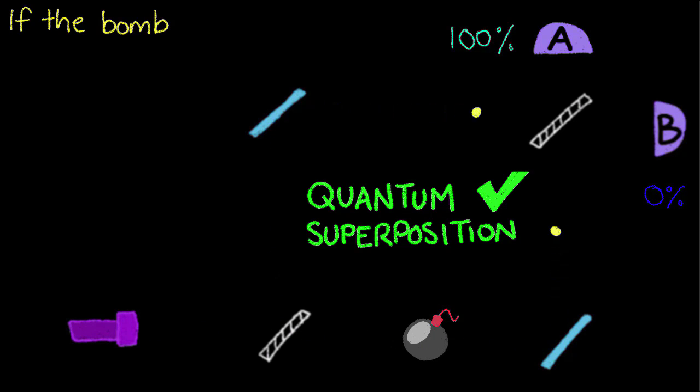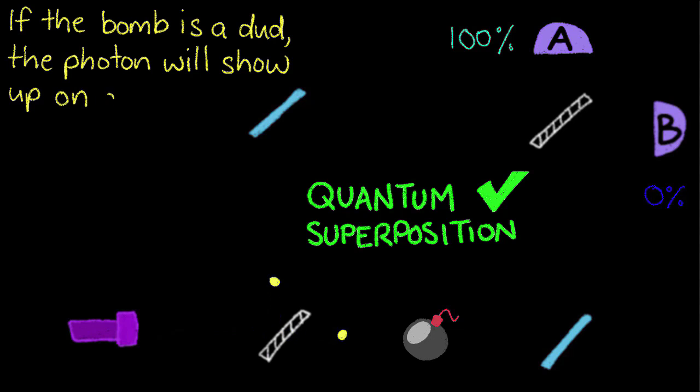So if the bomb is a dud, the photon will always 100% of the time show up on detector A. Now let's try the live bomb.